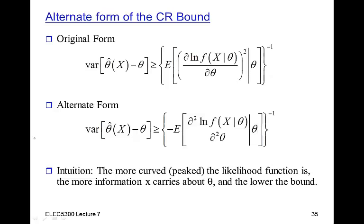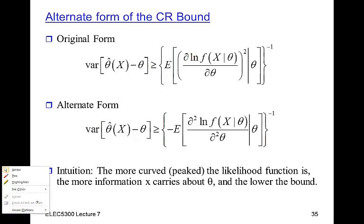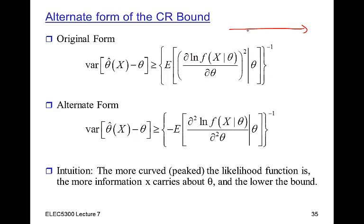If you remember our previous discussion, we have this idea of whether, if you look at the log likelihood — let's say we're trying to estimate the mean of a Gaussian — then we have a set of data points. If you look at the likelihood, it's going to be something like this. The log likelihood will achieve its maximum value at the maximum likelihood estimate. What we'd like to look at is the derivative of the log likelihood as a function of theta and see how peaked this is.